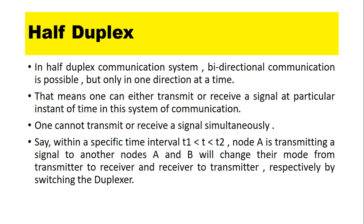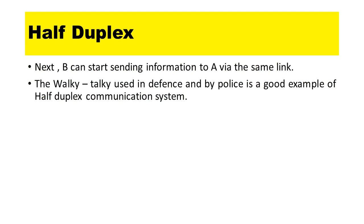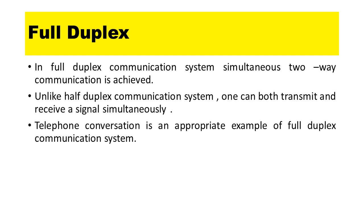Node B will change its mode from receiver to transmitter via switching the duplexer, and then B starts sending information back to A via the same link. The walkie-talkie used in defense and by police is a good example of a half duplex communication system.